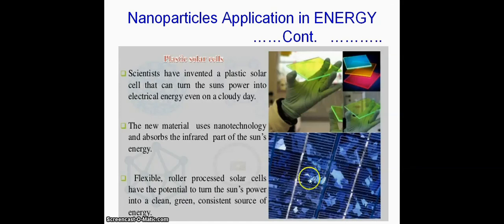Another application: scientists have invented a plastic solar cell that can turn the sun's power into electrical energy even on a cloudy day. The new material uses nanotechnology and absorbs the infrared part of the sun's energy. These are flexible, roller-processed solar cells and have the potential to turn the sun's power into electrical energy.